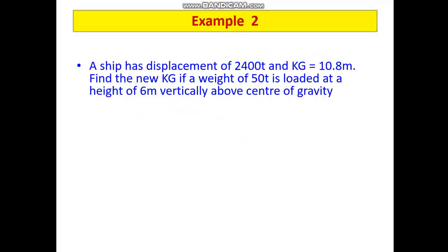Now, very quickly, let us just go through a simple example. A ship has a displacement of 2400 tons and KG 10.8 meters. Find the new KG if a weight of 50 tons is loaded at a height of 6 meters vertically above the center of gravity.